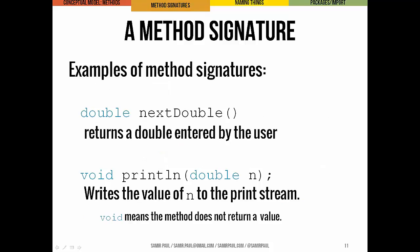Here are a couple of examples using those same two methods. The nextDouble method takes no parameters, it's called nextDouble, and it has a return type of double. For the println method, this is one particular definition in the PrintStream class — this particular definition takes a single double input and writes the value of n to the print stream. The return type is void — nothing actually gets returned. We do write something to the print stream, but there's no return value.